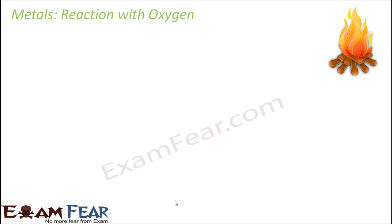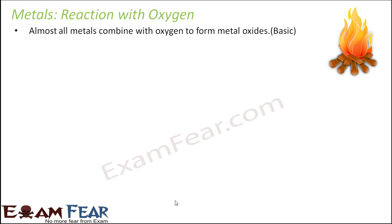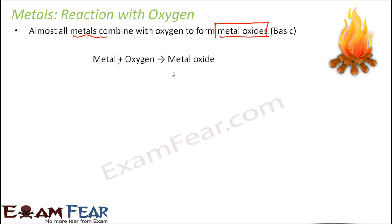First, let us talk about how metals react with oxygen. Oxygen is present in the air, so if a metal is exposed to air it should react with oxygen. Almost all metals combine with oxygen to form metal oxides. These metal oxides are basic in nature — we will talk about that later. For example, magnesium combines with oxygen to form magnesium oxide, that is MgO.